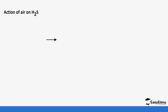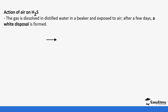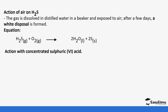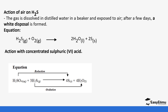Another reaction is the reaction of hydrogen sulfide with air. The gas is dissolved in water in a beaker and exposed to air, and after a few days a white deposit is formed. Hydrogen sulfide reacts with oxygen to form water and sulfur is deposited. When it reacts with concentrated sulfuric acid, formation of sulfur and water also occurs — this is similar to what we discussed when covering reactions of sulfuric acid.